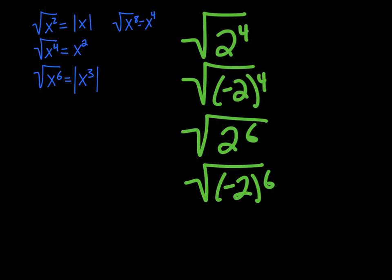If we looked with numbers, we would know that the answer to this is the square root of 16, which is 4. The answer to this is also the square root of 16, which is 4. The answer to this is the square root of 64, which is 8. The answer to this is also the square root of 64, which is 8. Notice that they're all positive. So really, we took the absolute value of each of our answers, even if there was a negative to start.